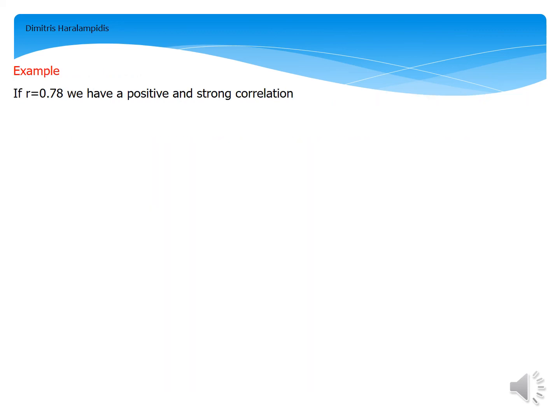Let's close with an example. If the correlation coefficient is equal to 0.78, then as we mentioned in the previous diagram, we must be able to say that we have a positive, since 0.78 is a positive number, and strong correlation, since 0.78 belongs to the segment that begins from 0.75 and ends at 1.